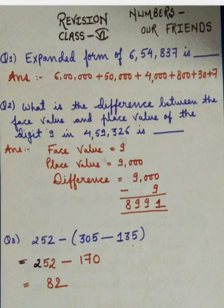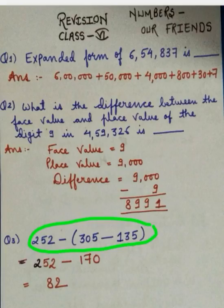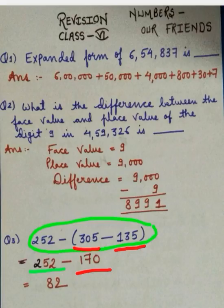In the next question, we are given one mathematical expression, and we can clearly see that a pair of brackets is used. We studied that if in an expression a pair of brackets is used, we first simplify the expression written inside the bracket. Here, 135 has to be subtracted from 305. On subtraction we get 170, and 252 is written as it is. Further on, 170 will be subtracted from 252 and we will get 82 as the answer.